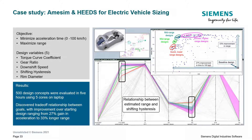This shows the power of applying AimSim to HEEDS, where a design space exploration was run to understand the trade-off between acceleration time and range. The vehicle model was built in AimSim which provides the virtual prototype predictions. In five hours, 500 design concepts were automatically explored by HEEDS by varying five design parameters: the torque curve coefficient, gear ratio, downshift speed, shifting hysteresis, and rim diameter. HEEDS was able to find a set of optimal designs that reduced acceleration time by up to 27% and improved range by up to 33% from the baseline.